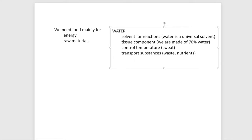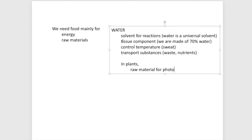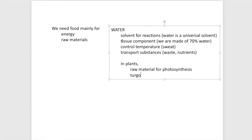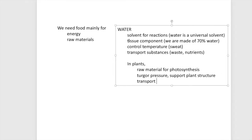Water also transports substances — digested materials, waste materials — to and fro all over the organism. In plants, water is one of the raw materials for photosynthesis. It helps to keep the plants upright and rigid, and also helps the plant to move food materials, salts, and things like that up and down the plant.